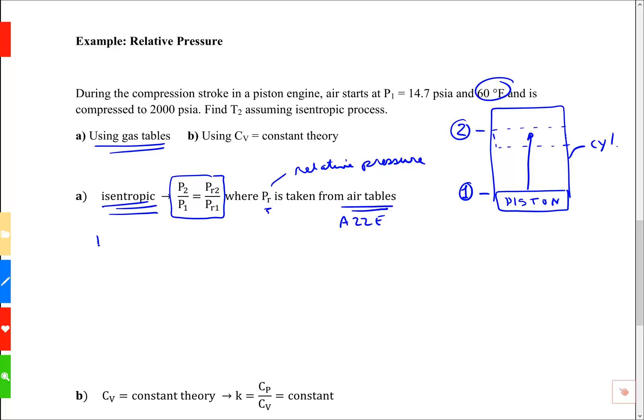We've got PR at 60 Fahrenheit, or 520 Rankine, is 1.2147. We can use this since PR is a function of temperature to find the final PR which will help us find the final temperature.